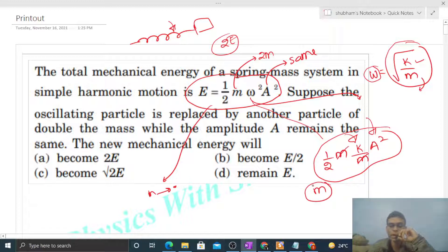So we can say the energy will remain E as long as amplitude doesn't change and spring constant doesn't change. Because if we double the mass, then omega will decrease.